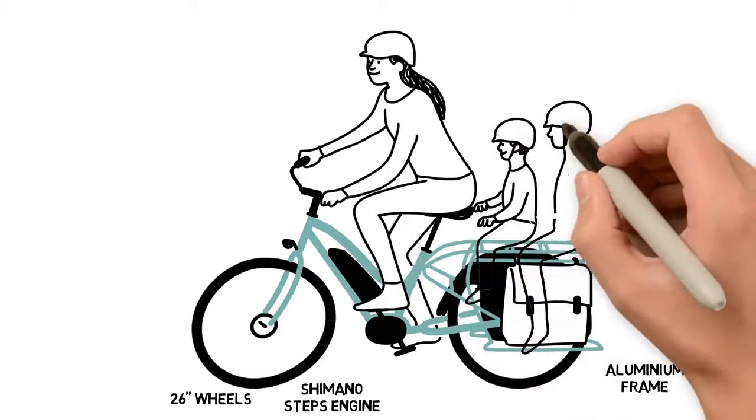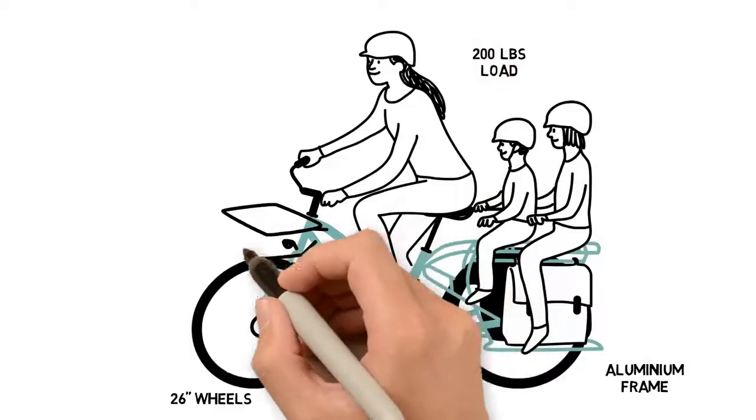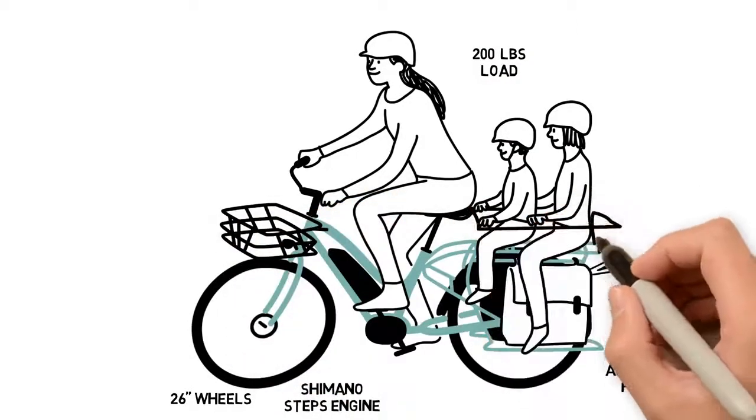I can carry two children on the back or loads up to 200 pounds. Yuba offers plenty of custom accessories such as the large fixed front basket and support bars for the children.